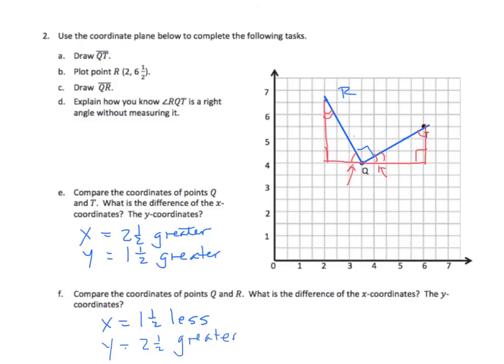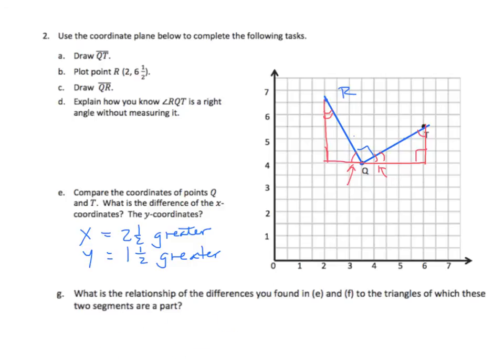So we need to look at the relationship between these two. We see that we have the numbers reversed, right? The difference here, we have 2 1/2 for X, we have 2 1/2 for Y. We have 1 1/2 for Y, and 1 1/2 for X, although these two are different in this regard, that the Y is 1 1/2 greater, and the X is 1 1/2 less. In part G, we're asked, what is the relationship between the differences you found in E and F to the triangles in which these two segments are apart? Well, the differences we discussed previously, so we switch the 2 1/2 difference between the X and the Y, same with the 1 1/2 difference. We had one that was greater than, and one that was less than.